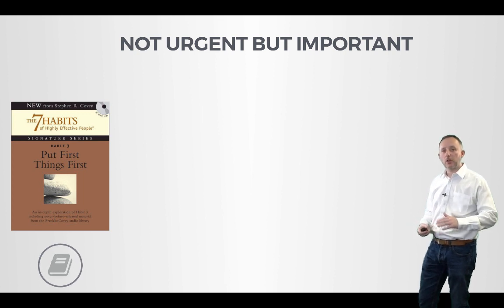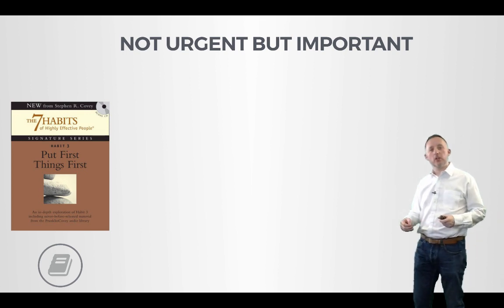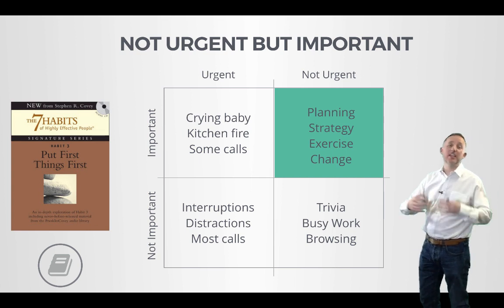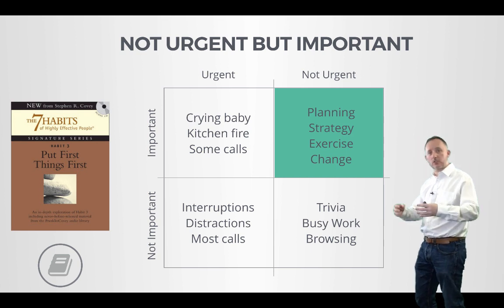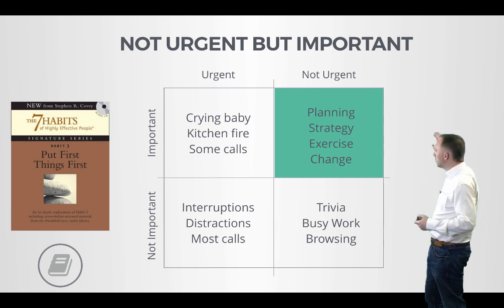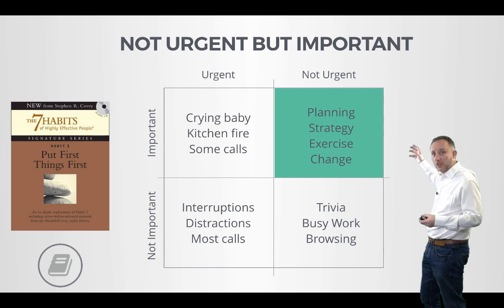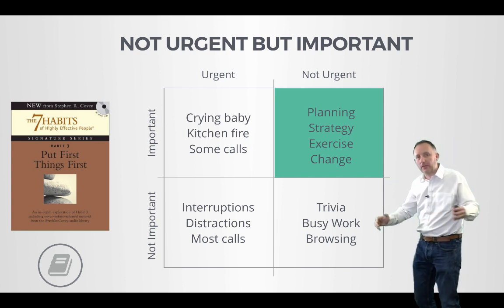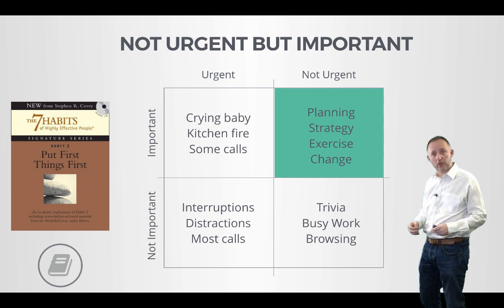One such book is The Seven Habits of Highly Effective People by Stephen Covey. Covey wrote a second book called Putting First Things First, in which he created a quadrant that allows us to understand where high performance comes from. What Covey says is that planning, strategy, exercise, and change — things that are not urgent but very important — are where competitive advantage, cost reductions, or whatever you seek with digital transformation can be found.